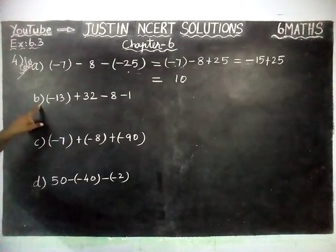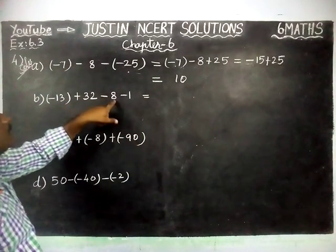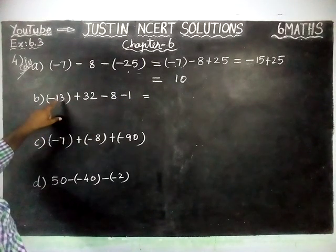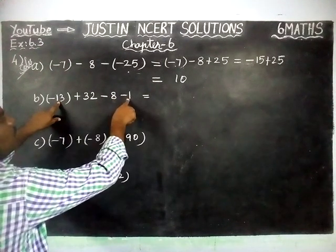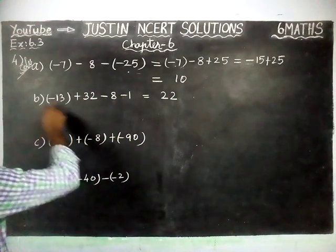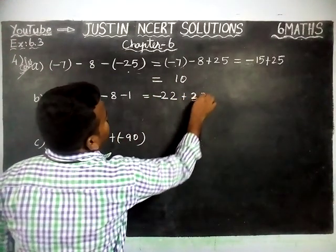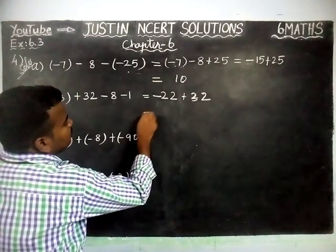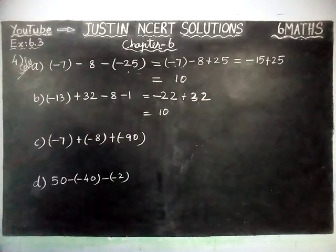For Part B: minus 13 plus 32 minus 8 minus 1. We are going to add all the negative numbers first. Minus 13 plus 8 is equal to 21, and 21 plus 1 is equal to 22. All three numbers are minus, so minus 22. Then plus 32. One is negative, one is positive — the difference is 10. The sign in front of the greatest number is plus, so plus 10 is the correct answer.